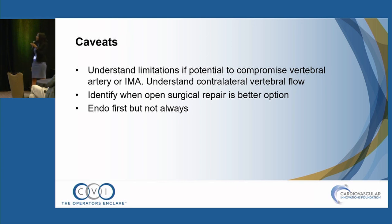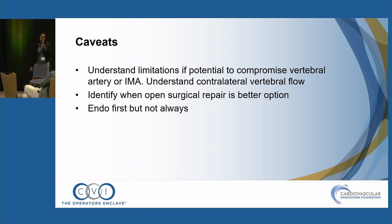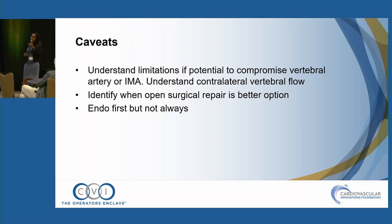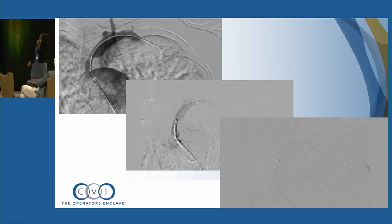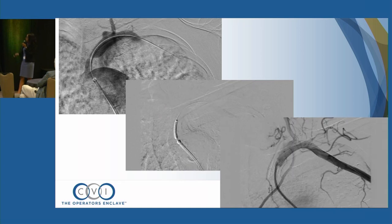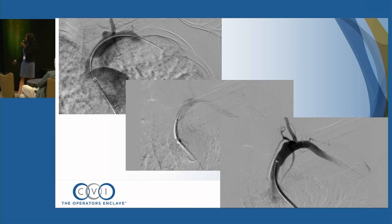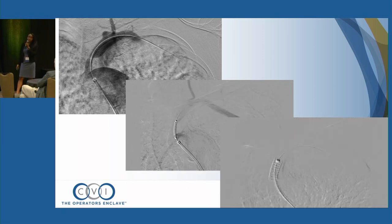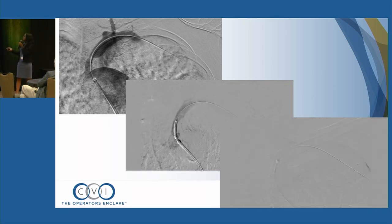There are always caveats with any subclavian intervention — understand the potential limitations. If there's a risk of compromising vertebral flow, understand the contralateral vertebral flow as well. Identify when open surgical repair is a better option, especially with long CTOs that are very hard to cross. We should always try to aim for endo first, but it's not always the answer. Looking at the case: we went from a femoral approach, used a 7 French 90cm sheath, did IVUS to identify vessel size, and placed an 8 by 20 omni-linked stent. We had a really good result and she had significant improvement in arm claudication symptoms.